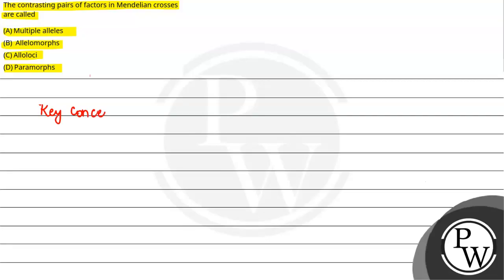The key concept here is alleles, and we also call them allelomorphs. So what are these? These are different forms.